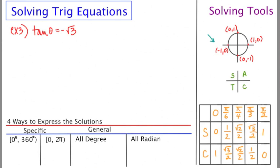And I know tangent is negative in quadrants 2 and 4. So I'm going to draw a little set of axes right here and put an arbitrary angle that terminates in quadrant 2 and another one that terminates in quadrant 4.